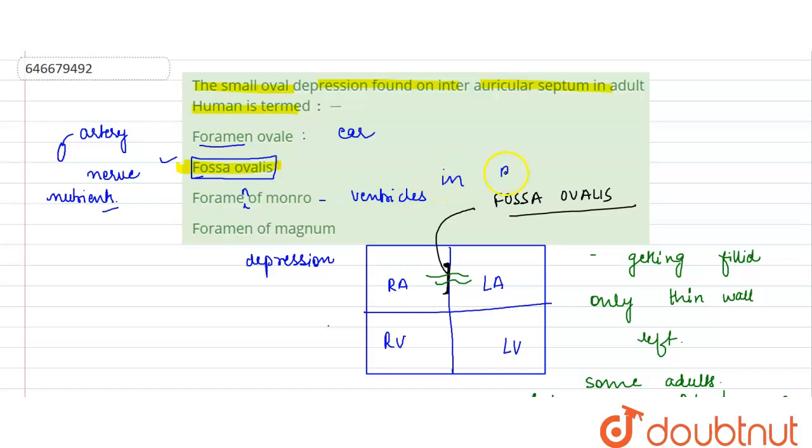Foramen of Monroe connects the ventricles in the brain, whereas foramen magnum is present in the skull from where the spinal cord leaves. So the answer over here was the fossa ovalis.